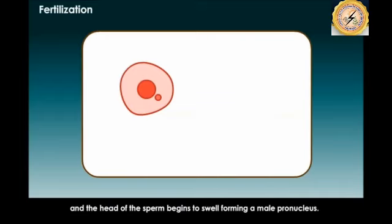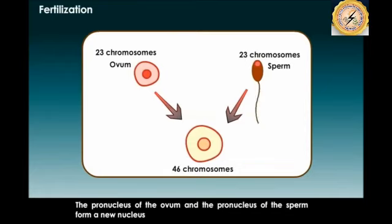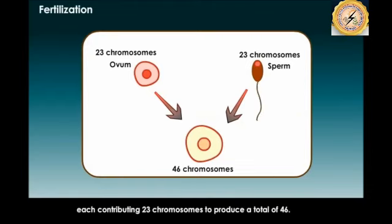The head of the sperm begins to swell, forming a male pronucleus. The pronucleus of the ovum and the pronucleus of the sperm then fuse to form a new nucleus, with each contributing 23 chromosomes to produce a total of 46 chromosomes.